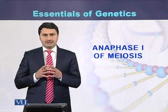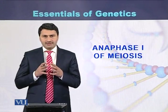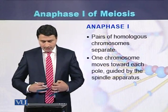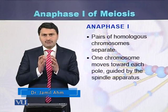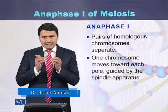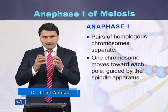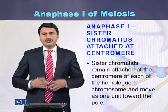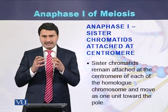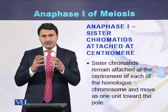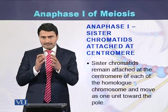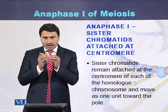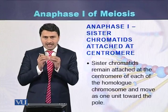Anaphase 1 of meiosis, also called anaphase 1 of meiosis 1. During anaphase 1, paired chromosomes separate from each other and move towards the poles. These chromosomes are guided by the spindle fibers. Sister chromatids during anaphase 1 remain joined at the point called the centromere.